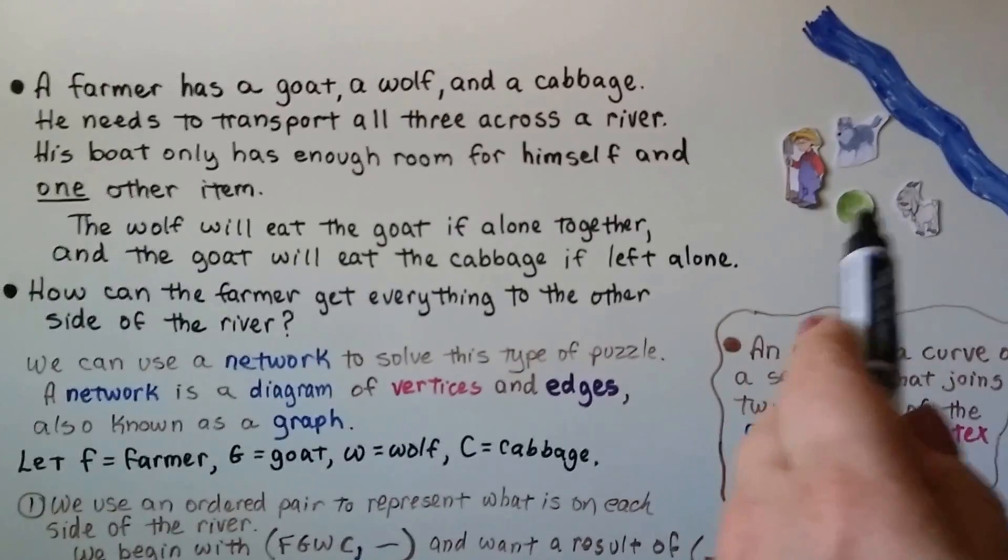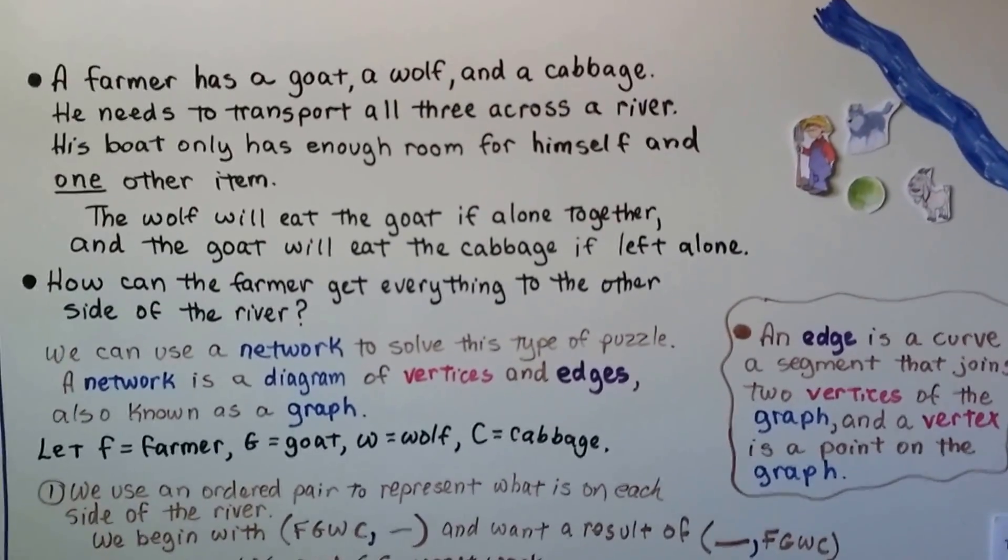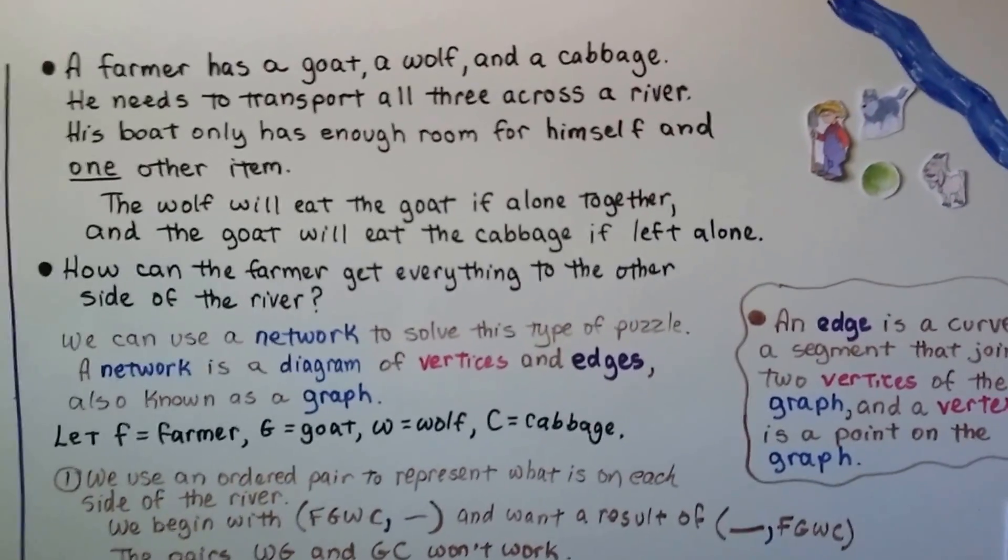Now the wolf is going to eat the goat if alone together, and the goat is going to eat the cabbage if alone. So how can the farmer get everything to the other side of the river?